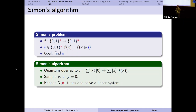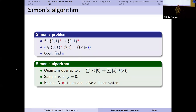Simon's algorithm is a very early quantum algorithm and a sort of predecessor of Shor's algorithm. It solves Simon's problem: we have a function f on n bits that is periodic, meaning there exists a fixed value s such that adding it to the input doesn't change the output. The goal is to recover this period. Classically this reduces to collision finding, but quantumly Simon's algorithm requires quantum queries to the periodic function and can efficiently sample values orthogonal to the period, then recover it by solving a linear system.